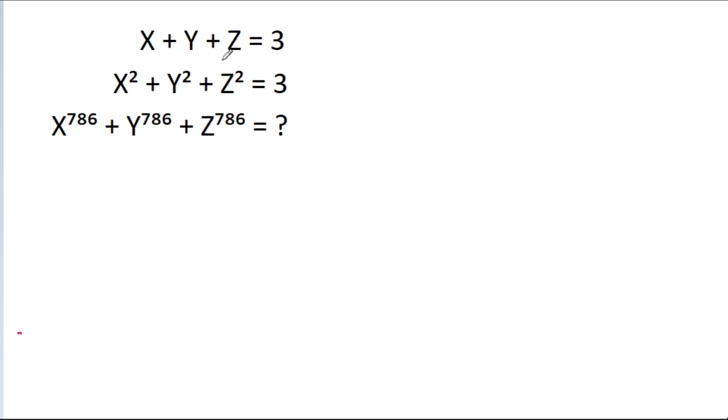In this video, we have given that x plus y plus g is equal to 3, and x square plus y square plus g square is equal to 3. Then we have to find the value of x power 786 plus y power 786 plus g power 786.